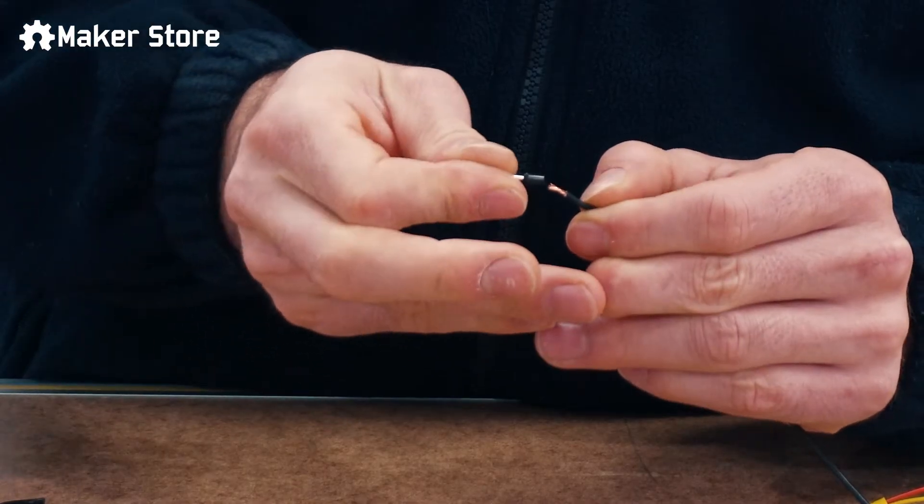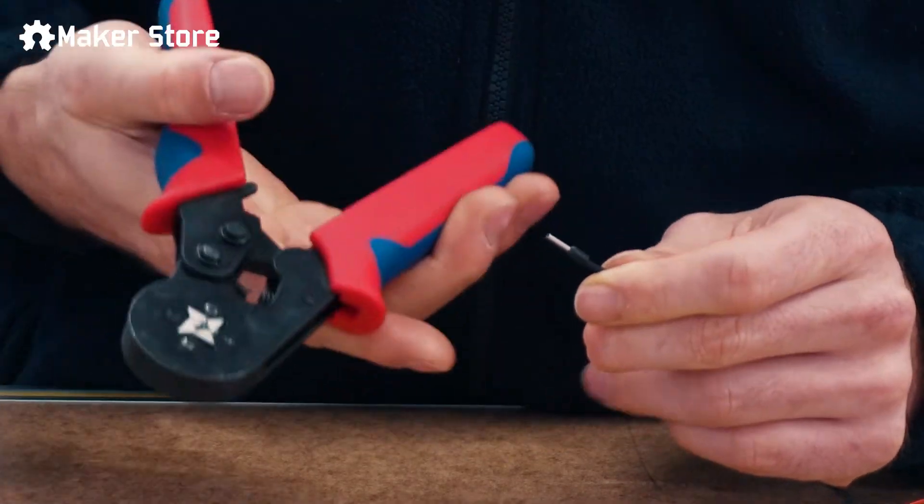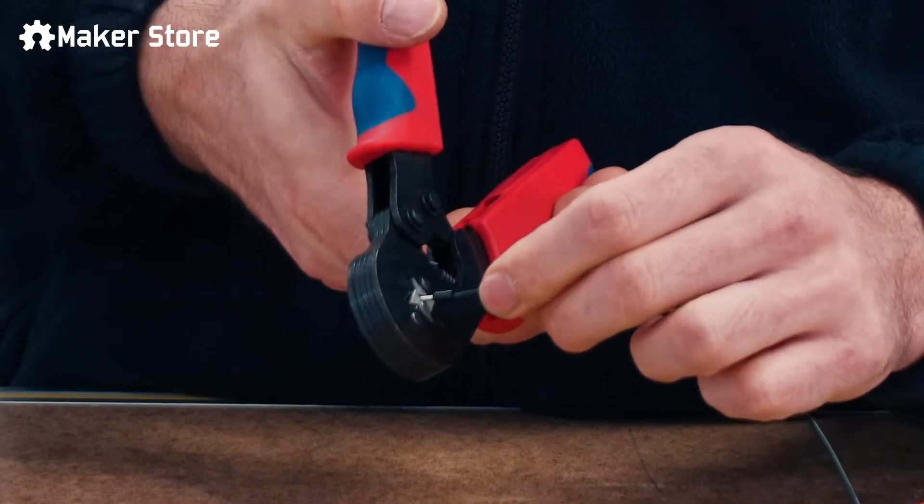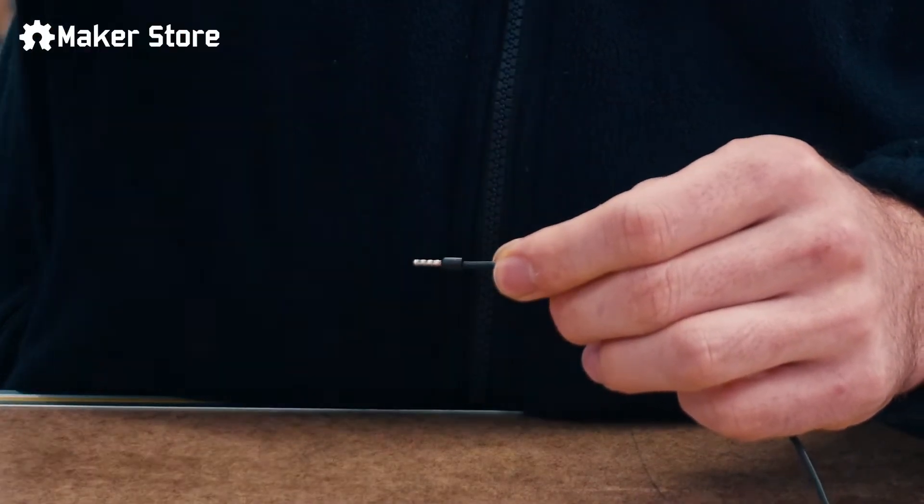Without ferrules, wiring can become worn and frayed from repetitive movement or strain. By adding this simple component to the end of your wires, you provide strain relief and prevent the wires from slipping out of your screw terminals.